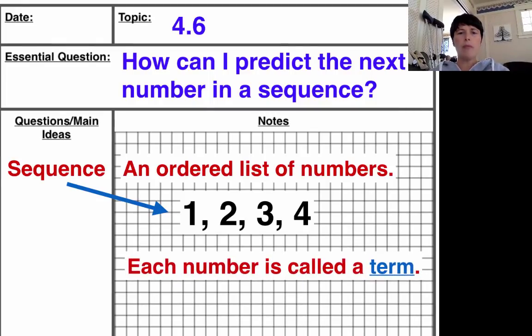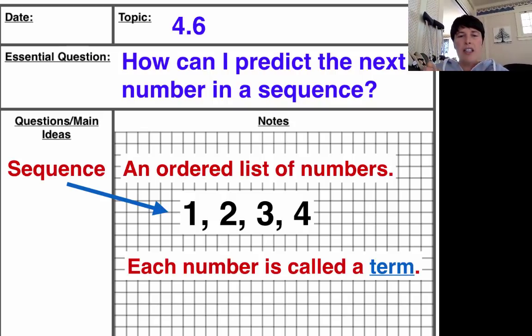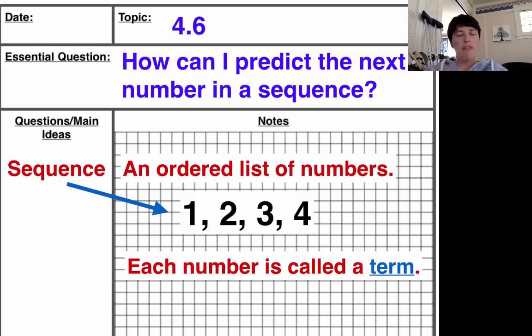So let's try some problems. And before we do, this is probably important to write down. Each number in that sequence is called a term. That's what we call it, is a term. So each number is called a term. So the 1 is a term, 2 is a term, 3 is a term, and 4 is a term.